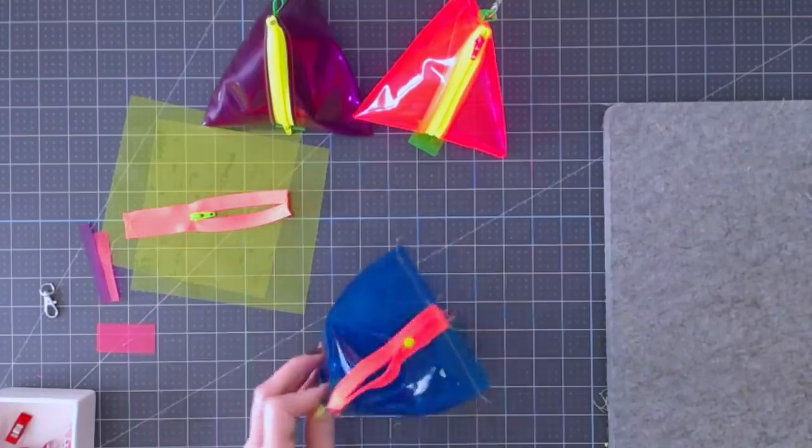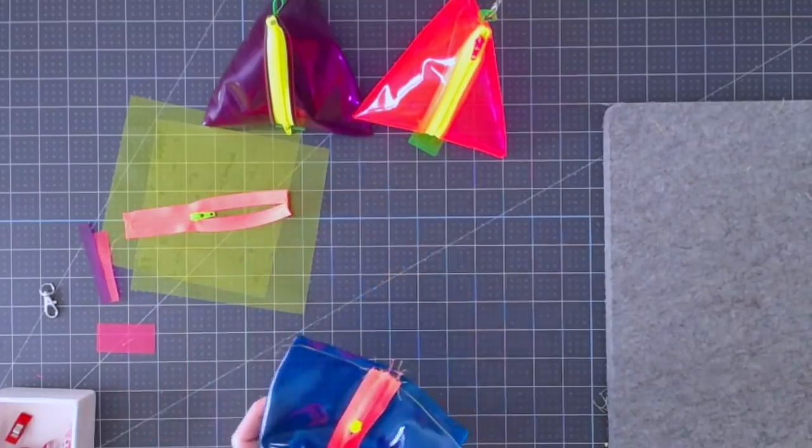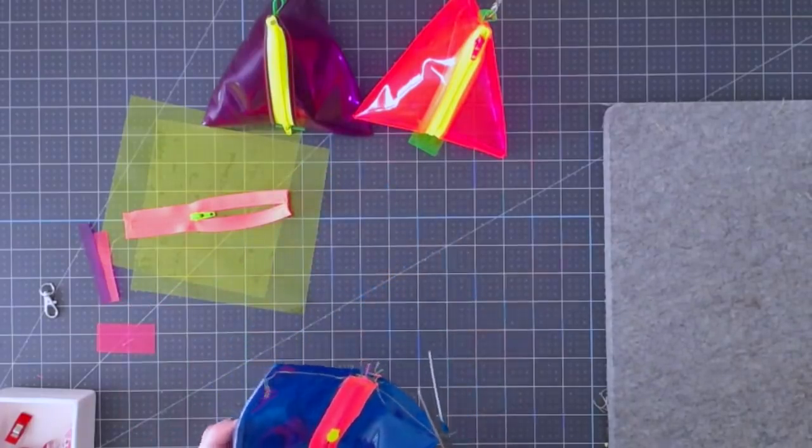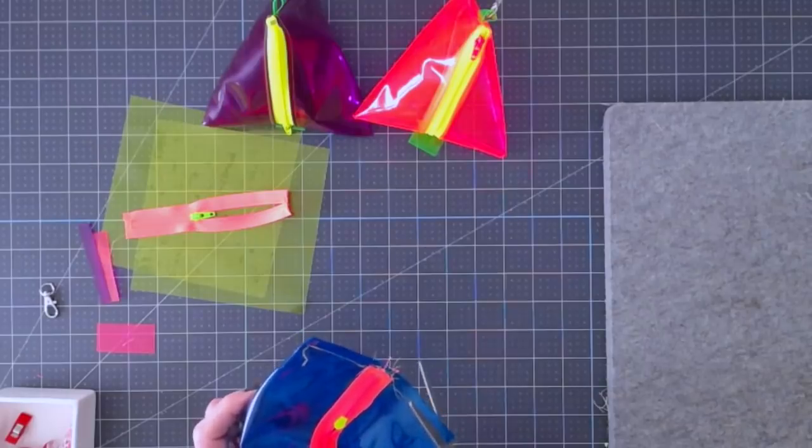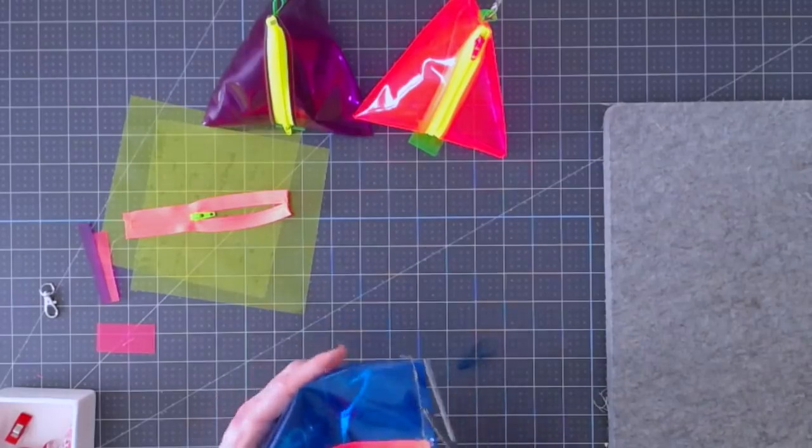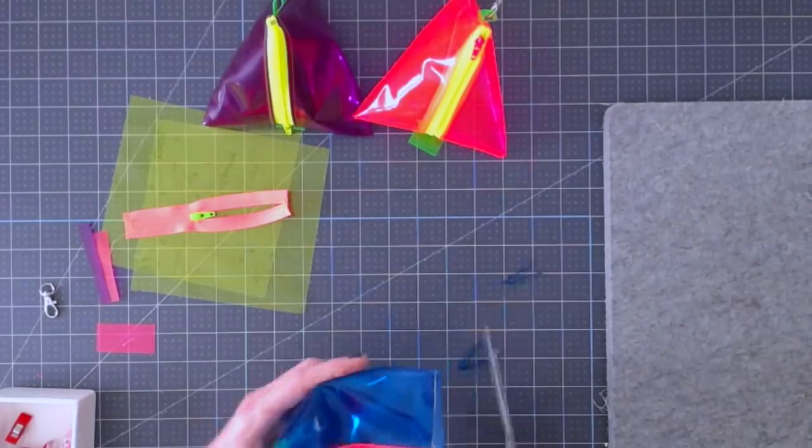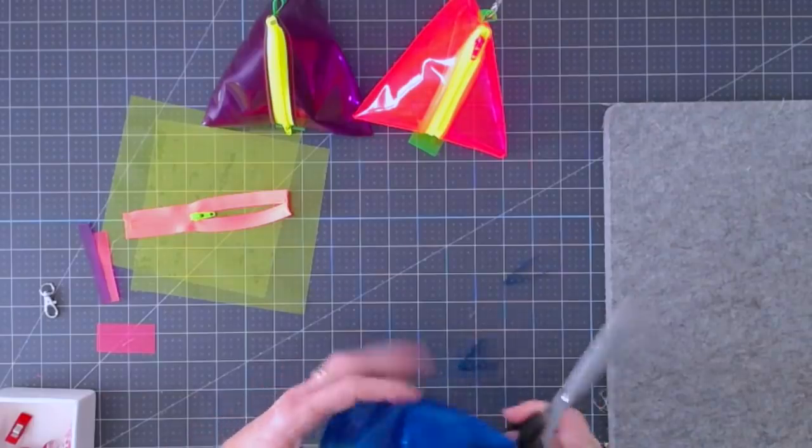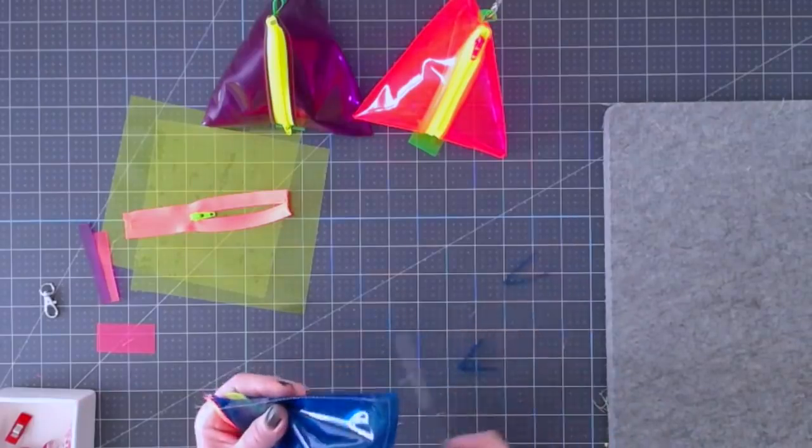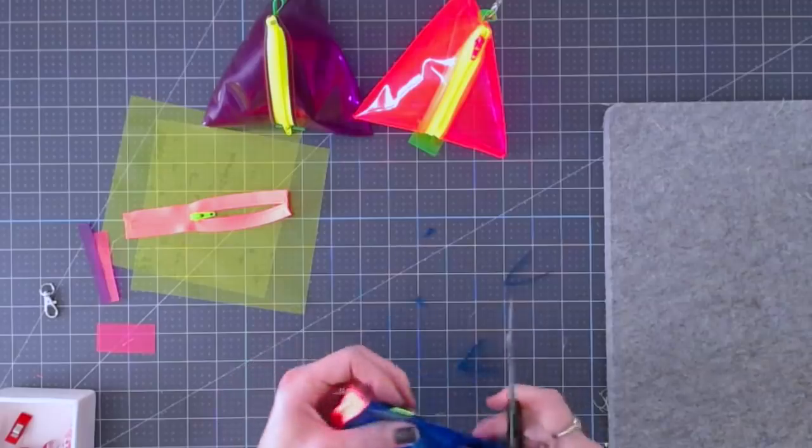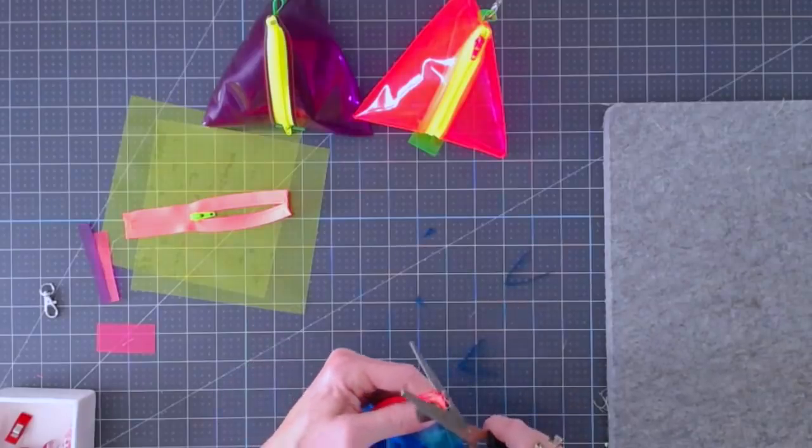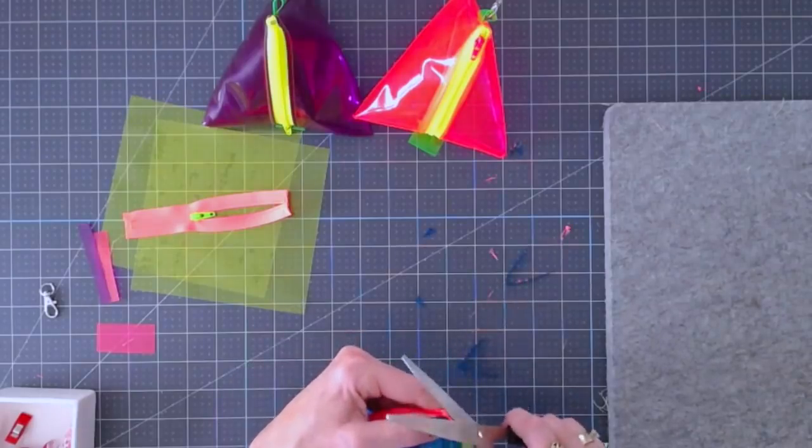All right, so it should be looking like this. So take our scissors and we're going to cut off any threads and our corners, making sure we don't cut into that seam allowance. Cutting off any excess PVC. Careful trimming down this zipper area.